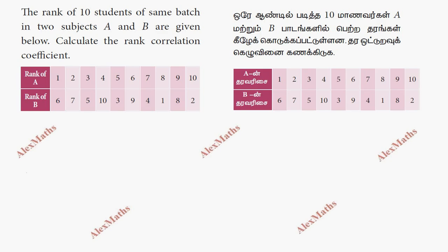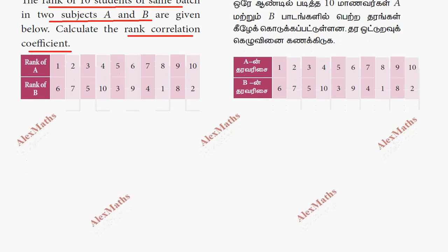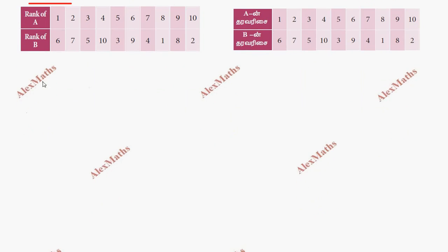Hi students, this is Alex. The problem involves 10 students with their ranks in a subject. We are finding the Spearman rank correlation coefficient. The first column is the rank of X and the second column is the rank of Y.